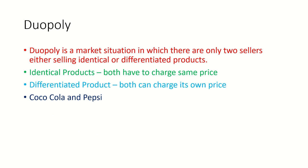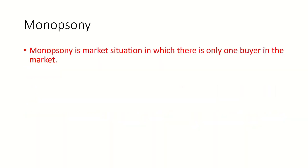To summarize duopoly: duo means two and poly means seller, so duopoly means two sellers. It is a market situation in which there are only two sellers who may sell identical or differentiated products. If products are differentiated, both can charge their own price; if identical, both must charge the same price. Next is monopsony.